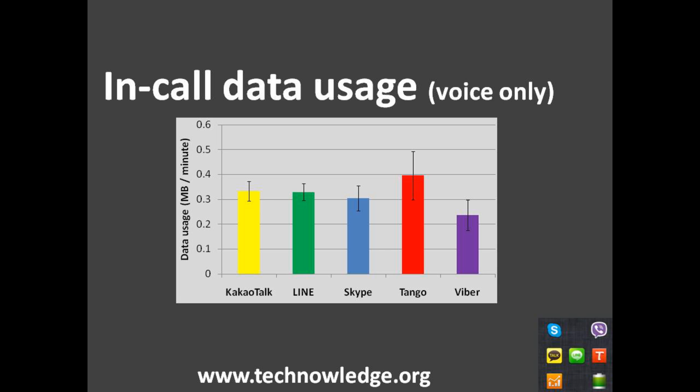Let's look at the results from the data usage during calls — this is over the cellular data network, not Wi-Fi. When you're calling on Wi-Fi, it's pretty much a free call depending on your Wi-Fi package. But if you're using cellular network data, there is a cost involved, depending on your package and what your network charges. It's a good thing to know how much data these apps actually use, as that could make a difference between making network calls versus VoIP calls.